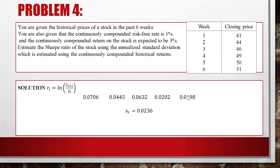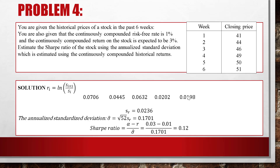From these returns, we calculate the sample standard deviation SR = 0.0236. Then we compute the annualized standard deviation: σ̂ = √52 × SR = 0.1701, since there are 52 weeks in a year. The Sharpe ratio is (α − R) / σ̂ = (0.03 − 0.01) / 0.1701 = 0.12.